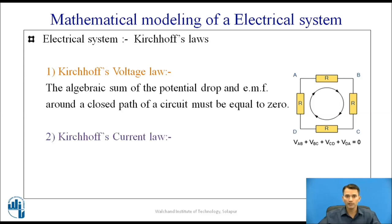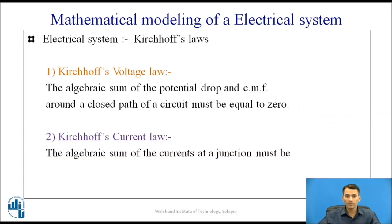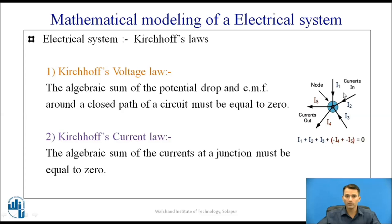Kirchhoff's second law is Kirchhoff's Current Law, which states that the algebraic sum of the currents at a junction must be equal to zero. For example, currents I1, I2, and I3 are incoming to a node, while currents I4 and I5 are outgoing. The algebraic sum is I1 + I2 + I3 − I4 − I5 = 0. These are the Kirchhoff's laws used to find mathematical modeling of electrical systems.